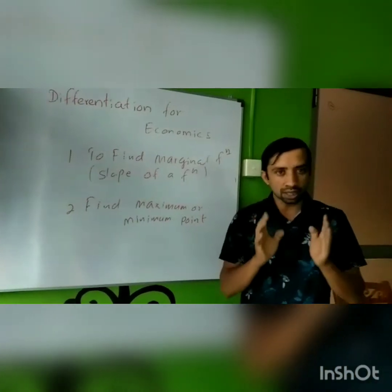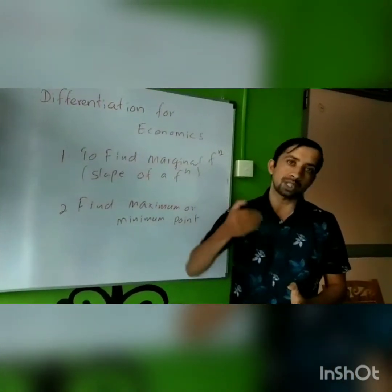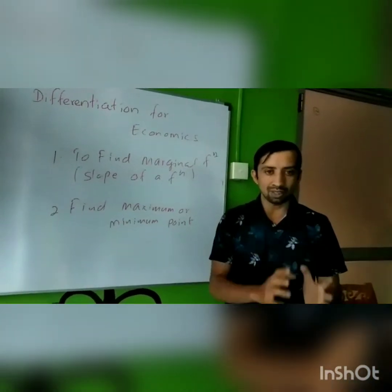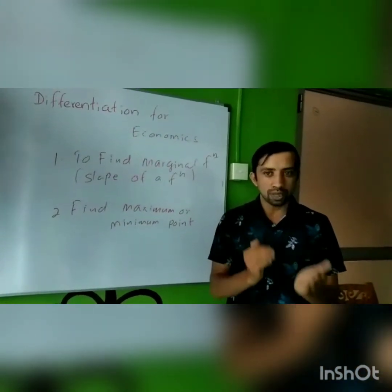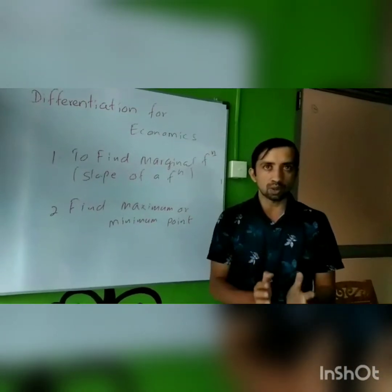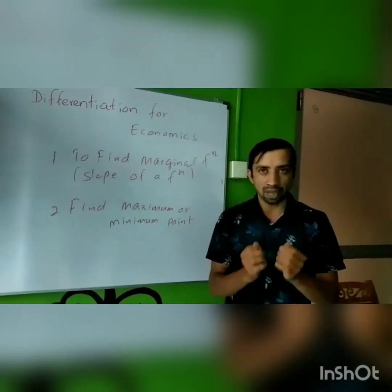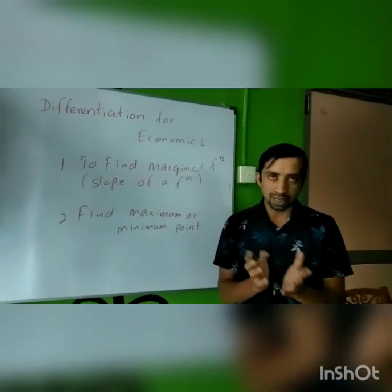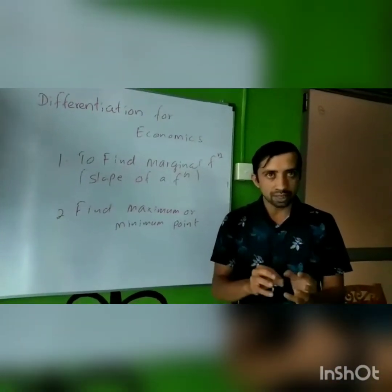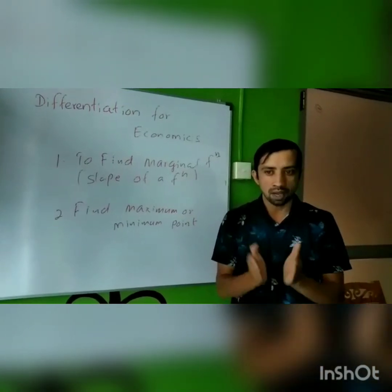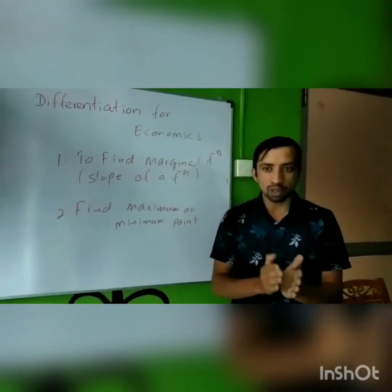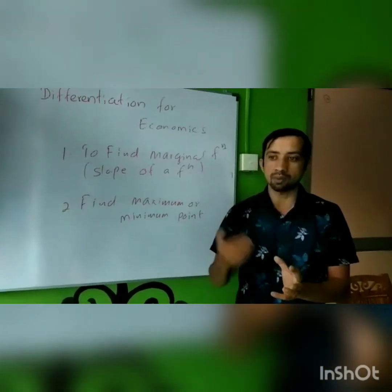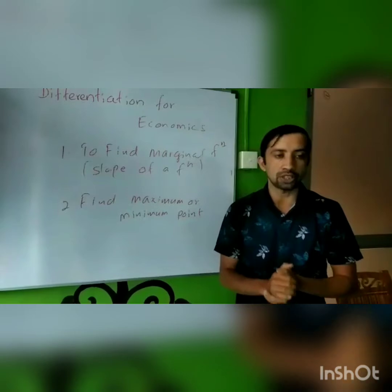When you are given the total revenue function, you differentiate it to obtain the marginal revenue function. Likewise, whenever you have a total function, you can use differentiation rules to find the marginal. Actually, the marginal function is the slope of the total function — differentiation finds the slope of a function. In economics, slope or change — the addition of something to the total — is known as the marginal.